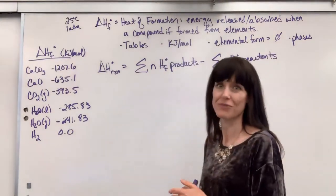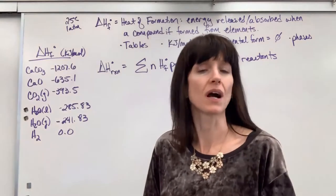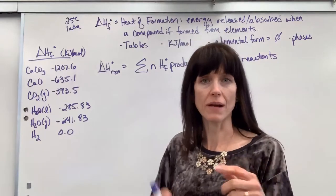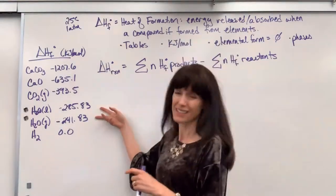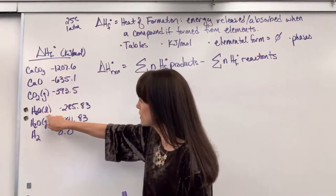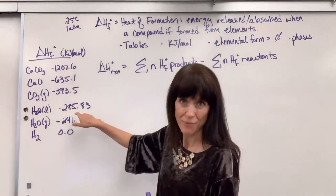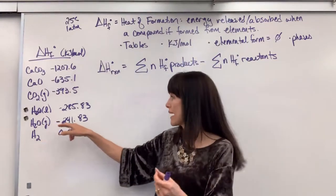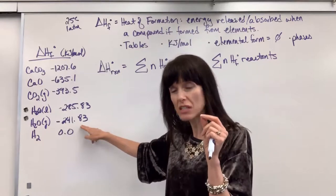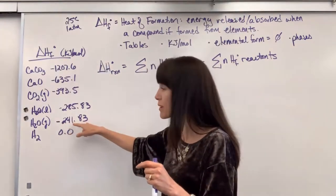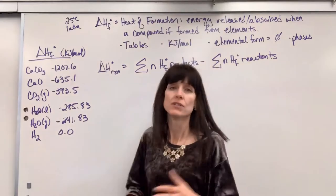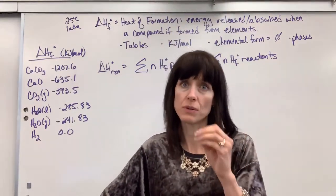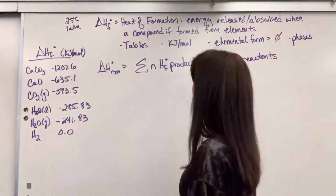Phases are also very important when you're reading these tables. A common mistake students will make, they go back and forth with these tables so much, they find the compound and write down the number, but don't double check the phase. Look at this. Water, H2O liquid is negative 285.83 kilojoules per mole, but water gas, the formation of water gas, it releases just a little less energy. It releases 241.83 kilojoules per mole. So be careful when you look at the tables, also look at phases.